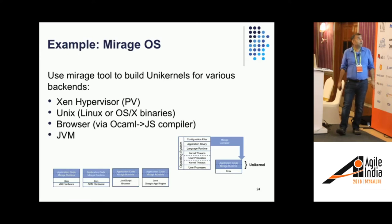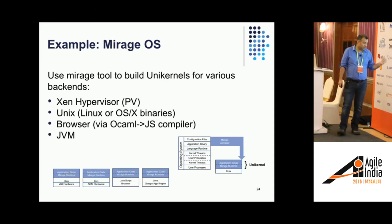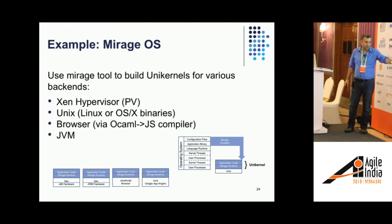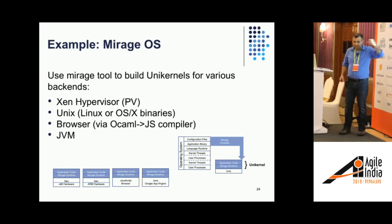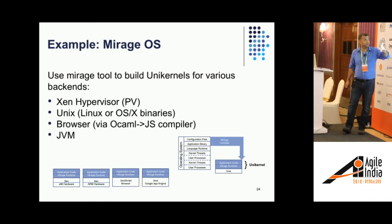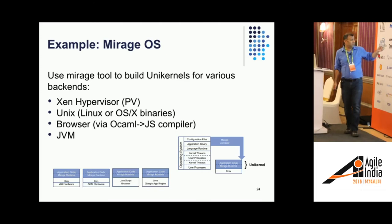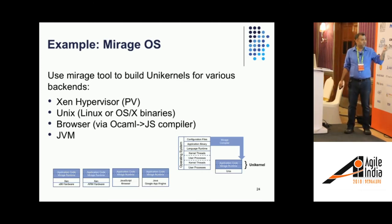Talking about MirageOS: the Mirage tool builds unikernels for various backends — x86 hardware, the browser, Google Java which can run on Google App Engine. It has components for all of these backends. You write your application in OCaml, and combined with these components, you can retarget all the different platforms that MirageOS supports. MirageOS version 3 supports some additional platforms beyond what I've included here.